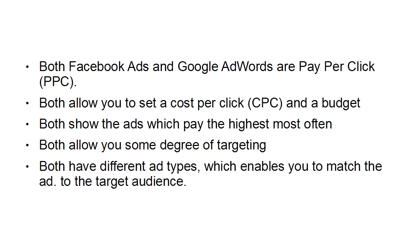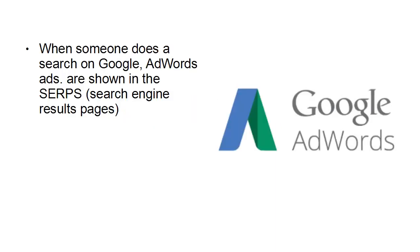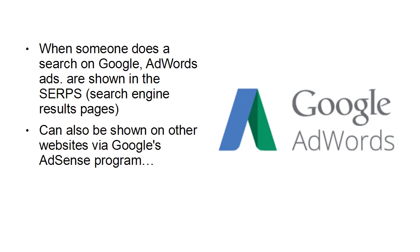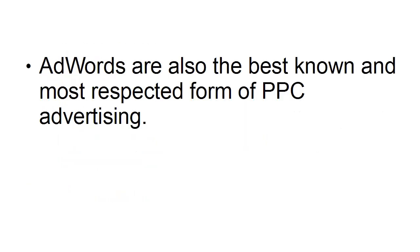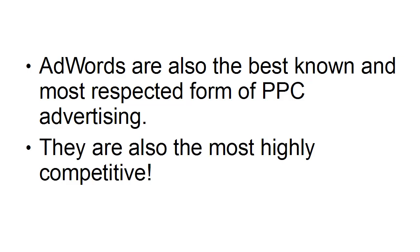But that's about where the similarity ends. When someone does a search on Google, AdWords ads are shown in the SERPs — that's the search engine results pages. They're generally shown down the right-hand column and sometimes across the top of the results, usually labelled as ads or sponsored results. You can also show an ad on somebody else's website via Google's AdSense program, meaning you can reach a very wide audience with Google AdWords. AdWords are also the best-known and most respected form of PPC advertising, but they're also the most highly competitive.